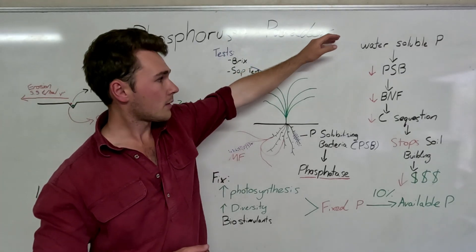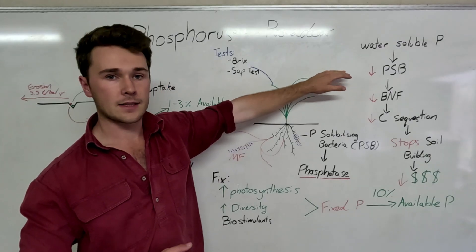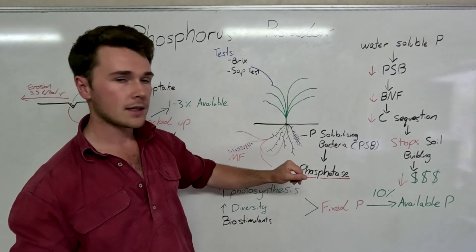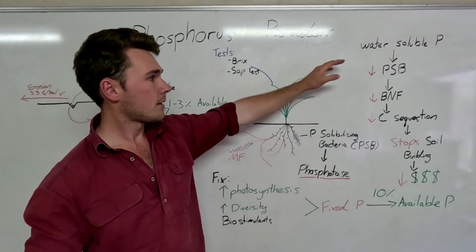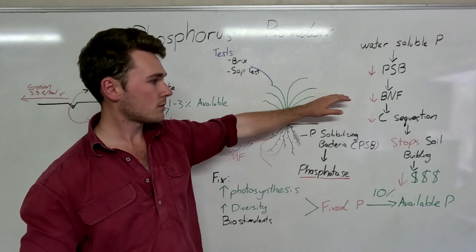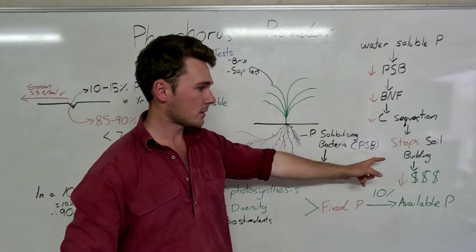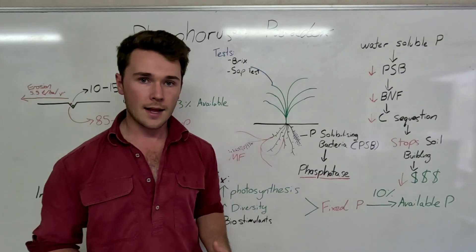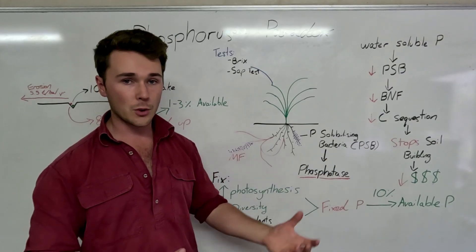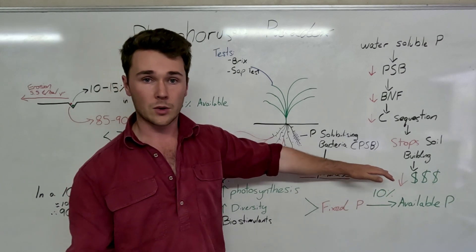And so as I was saying, when we apply water soluble phosphorus, it reduces our phosphorus solubilizing bacteria, which reduce their phosphatase enzyme production. Because of that, we get a reduction in biological nitrogen fixation, which means a reduction in carbon sequestration, which means we're going to stop our soil building. Now when we stop that, our soils become less and less fertile, leading to a reduction in productivity and profit of your farm.